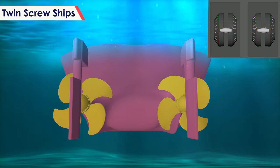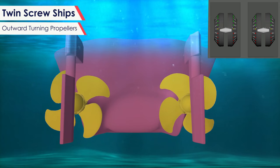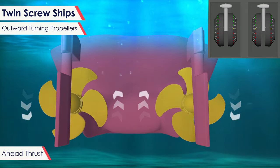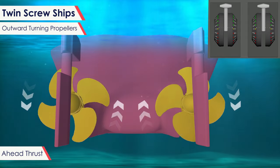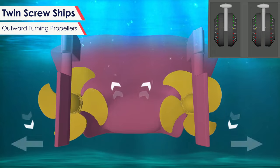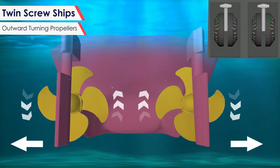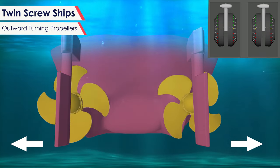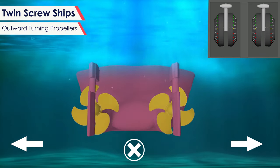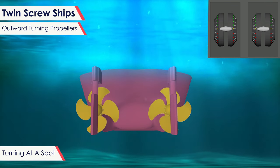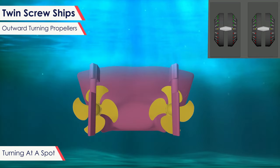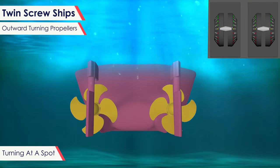Let's now look at the impact of transverse thrust on twin screw ships. First we will consider outward turning twin screw ships. In outward turning twin screw ships, for ahead thrust, the starboard propeller will be turning clockwise and the port propeller will be turning anticlockwise. The starboard propeller will generate transverse thrust and attempt to walk the stern towards starboard. However, the port propeller will attempt to walk the stern to port, thereby negating and cancelling the transverse thrust created by the starboard propeller. Turning at a spot becomes possible on these ships by using a combination of transverse thrust and fore and aft propeller thrust.